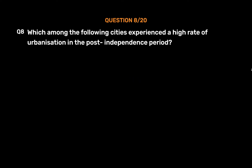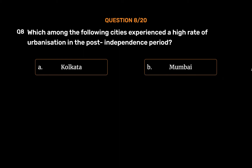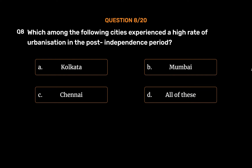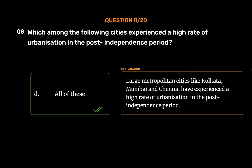Question 8: Which among the following cities experienced a high rate of urbanization in the post-independence period? Options: A. Kolkata, B. Mumbai, C. Chennai, D. All of these. The correct answer is Option D: All of these. Large metropolitan cities like Kolkata, Mumbai, and Chennai have experienced a high rate of urbanization in the post-independence period.